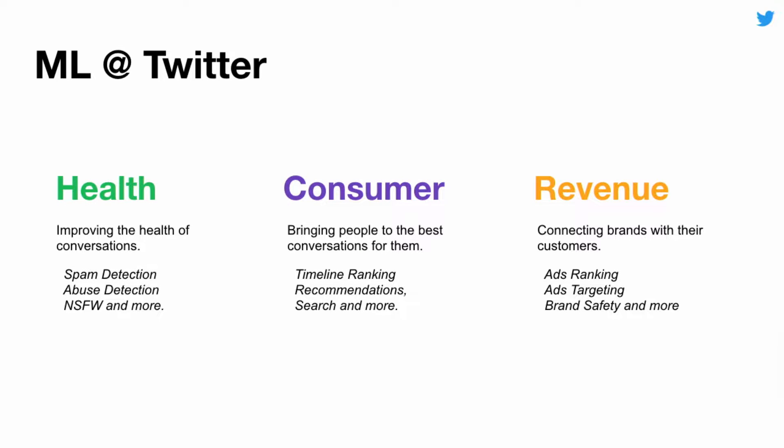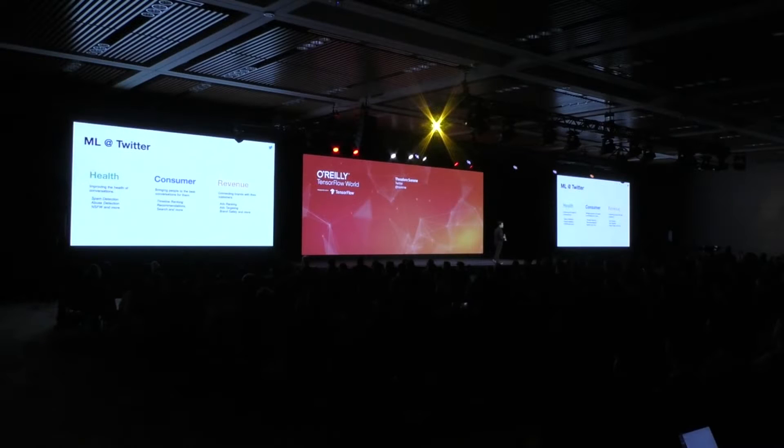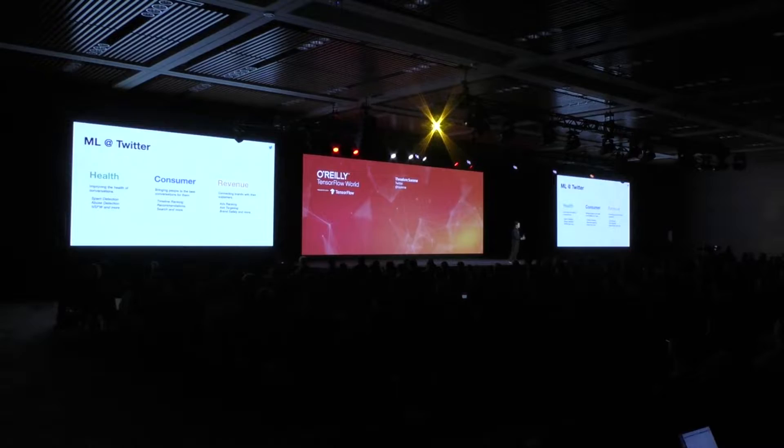And the third is brand safety. You might not think about this when you think about machine learning and advertising, but if you're a company like United and you want to advertise on Twitter, you want to make sure your ad never shows up next to a tweet about a plane crash. So how do we, at scale, protect our brands from those off-brand conversations? We use machine learning for this as well.